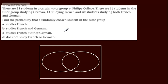Find the probability that a randomly chosen student in the tutor group: A studies French, B studies French and German, C studies French but not German, and D does not study French or German.